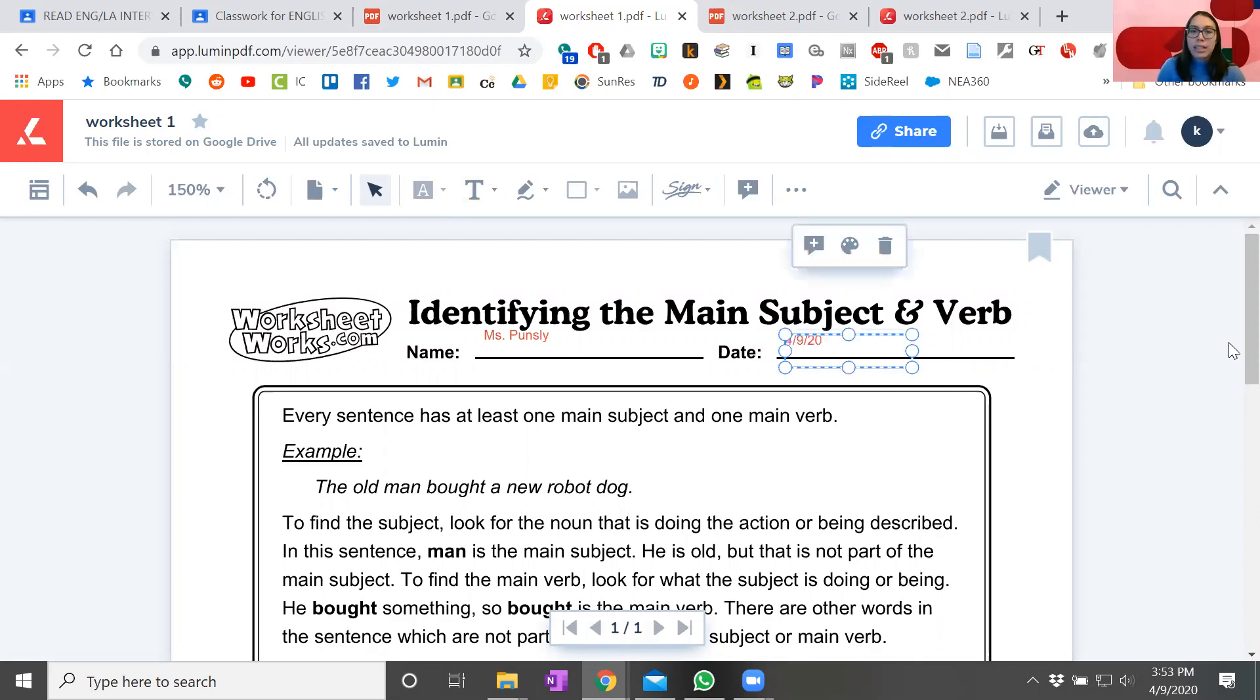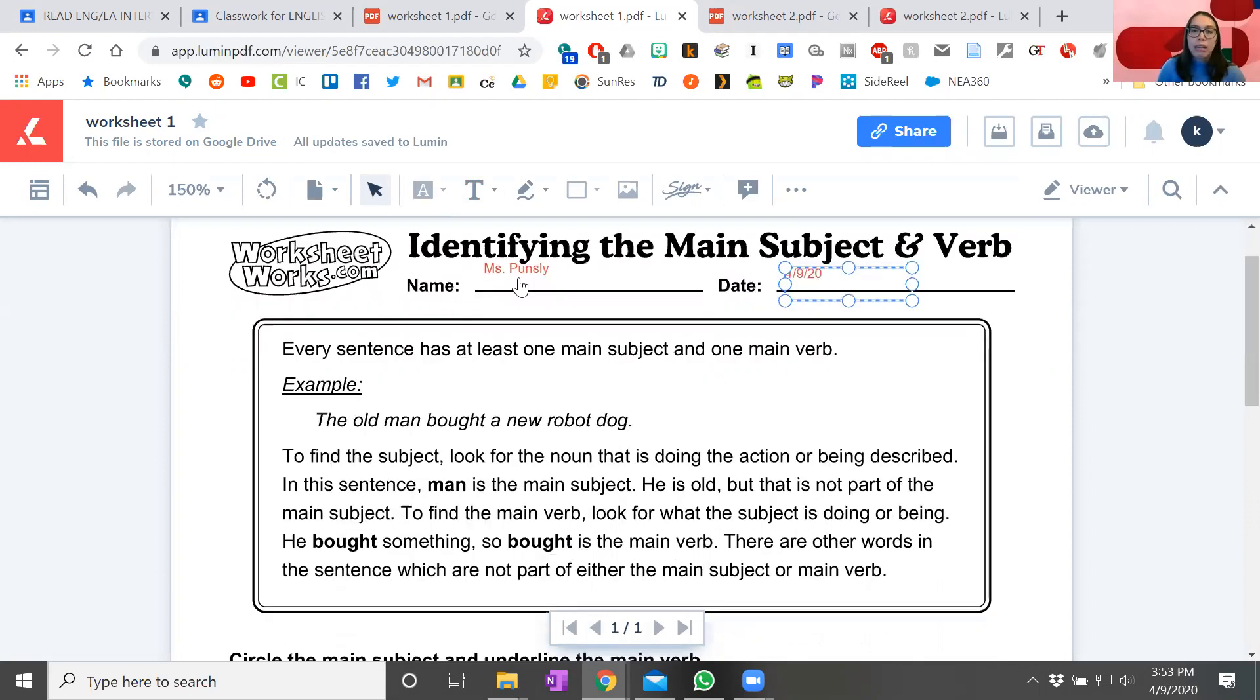So let's look at this example. We're identifying the main subject and verb. This says every sentence has at least one main subject and one main verb. So here's our example. The old man bought a new robot dog. To find the subject, we're going to look for the noun that's doing the action or being described. In this sentence, man is the main subject. He is old. Well, that's not part of the main subject. The sentence would be the same if you just said a man. To find the main verb, you want to look for what the subject is doing. He bought something, so bought is the main verb. There are other words in the sentence which are not part of either the main subject or the main verb. We're really just focused on these two words.